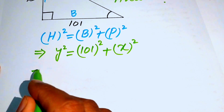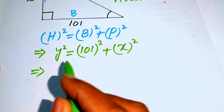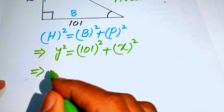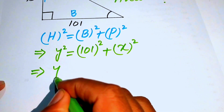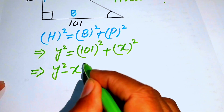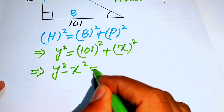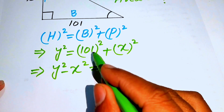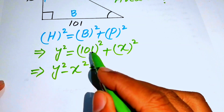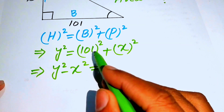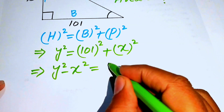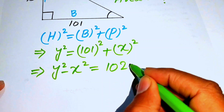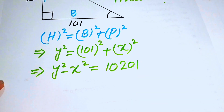We move x² to the left-hand side to get y² − x² = 101², and since 101² = 10201, we have y² − x² = 10201.